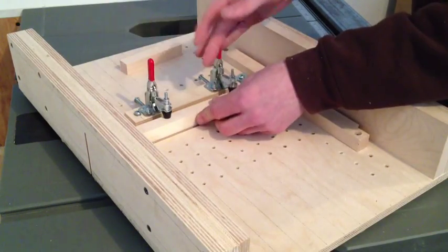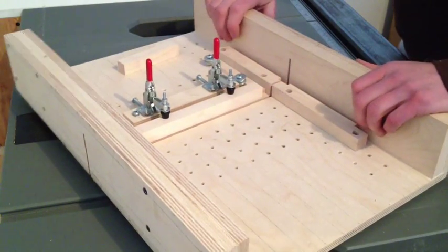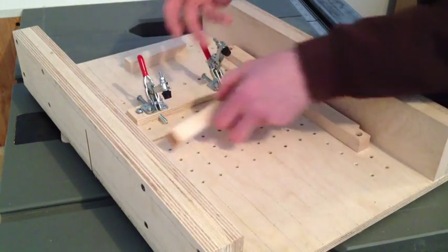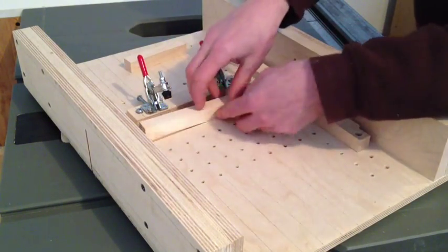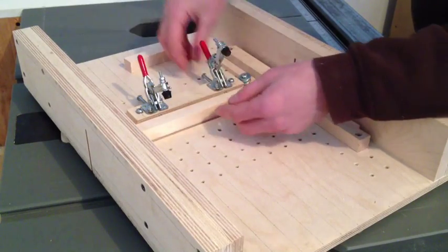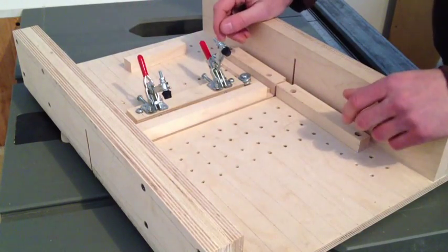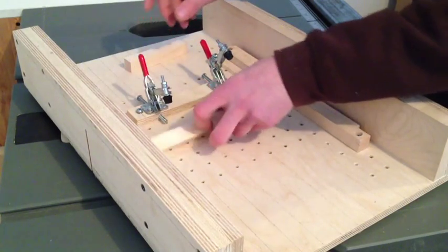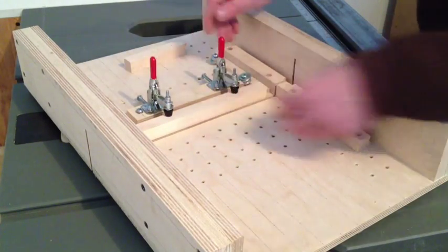They have a toggle clamp so I can keep my hands away from the blade and just make my cuts. And these screws in the back will let me adjust the position of this block to the blade. So I can move it up to say .78 inches, clamp it in place, make a cut on this side, spin it, make a cut on this side.